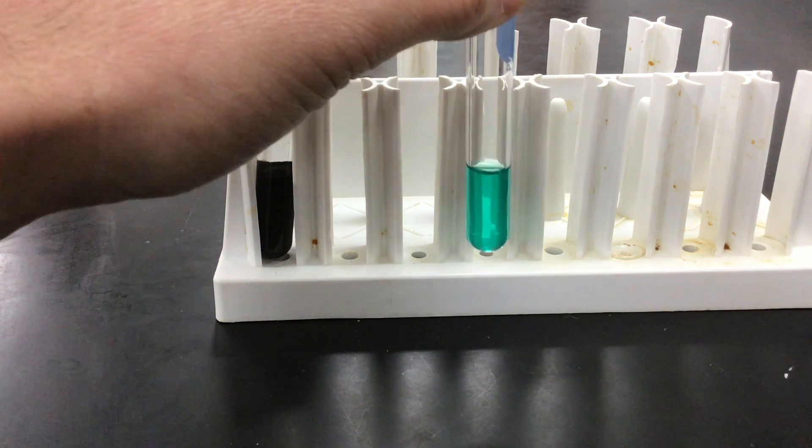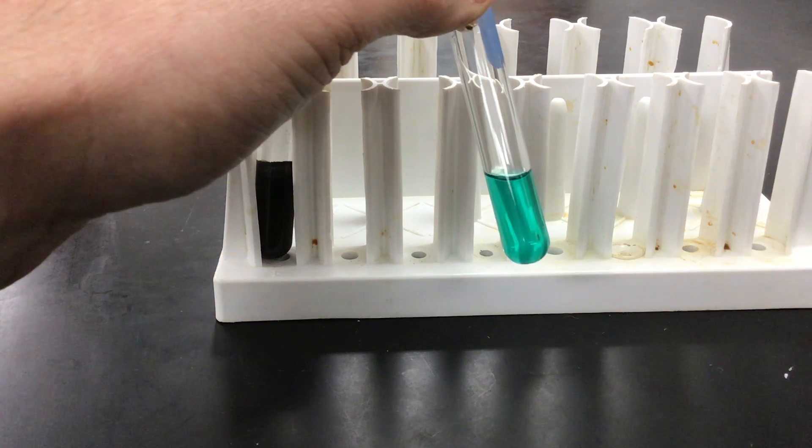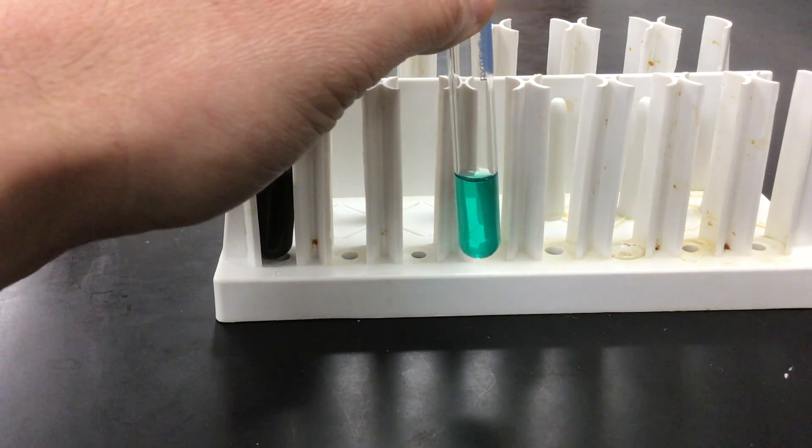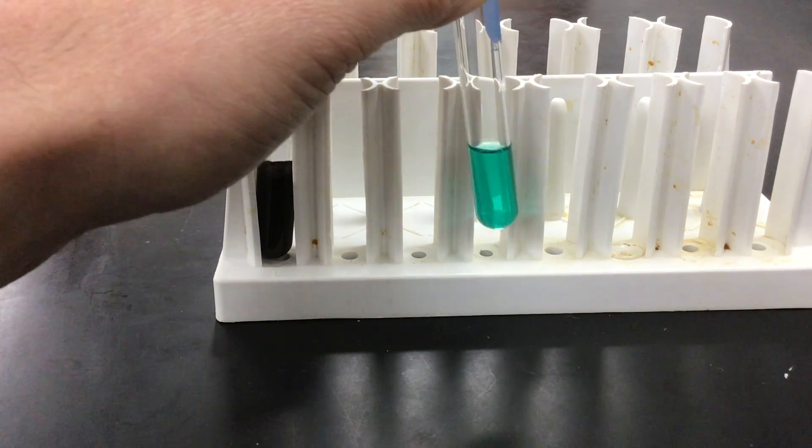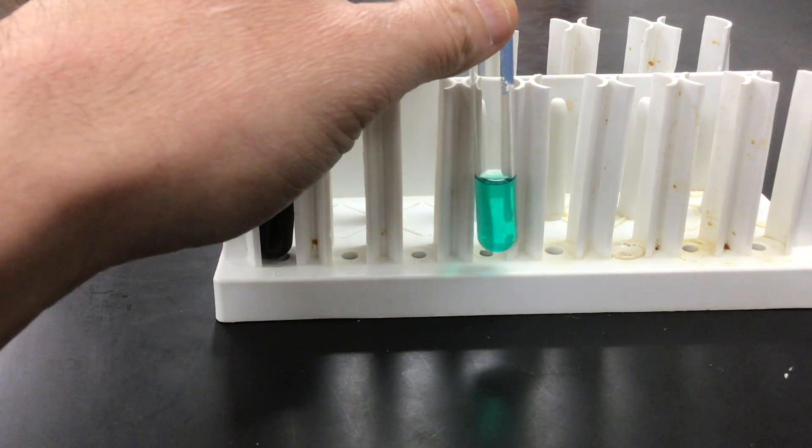So that is the color. You can see it's the color of the solution, along with the fact that you can see through it now. It's not opaque. So that's step four of the copper reaction.